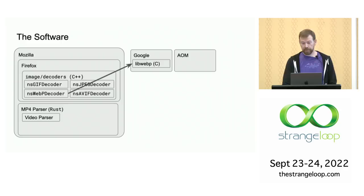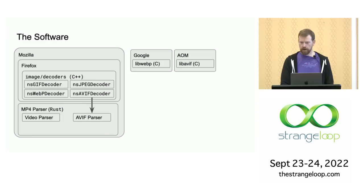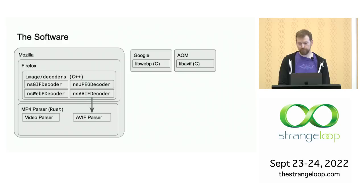There is a similar library called libAVIF from AOM, which Chrome uses, but Firefox would not. Instead, we extended the existing Firefox MP4 parser. Part of the reason being that libAVIF is written in C and the Firefox MP4 parser is written in Rust, a language whose memory safety makes the broadest class of security bugs impossible. This is very valuable when reading untrusted input, such as random images from the Internet.